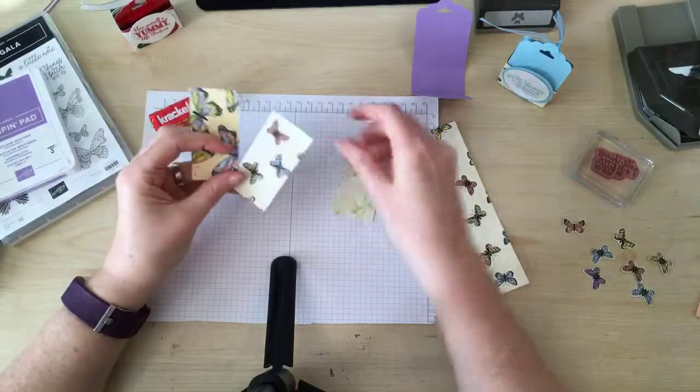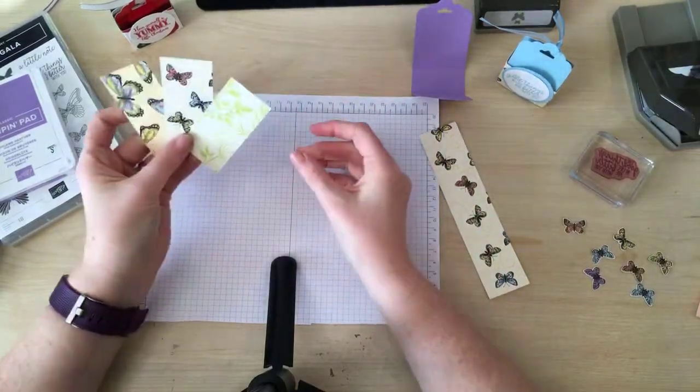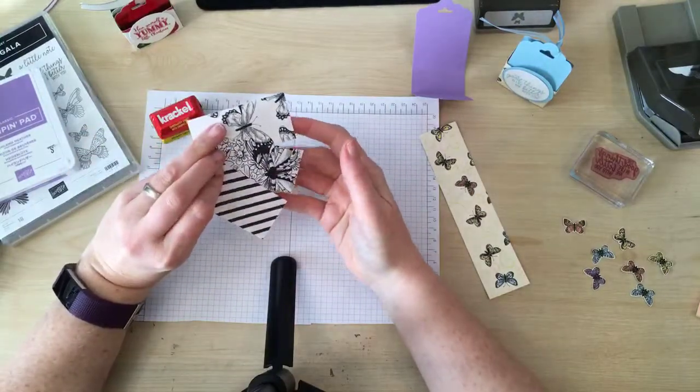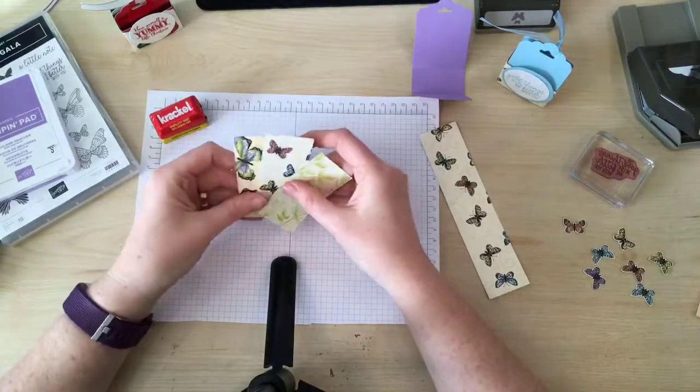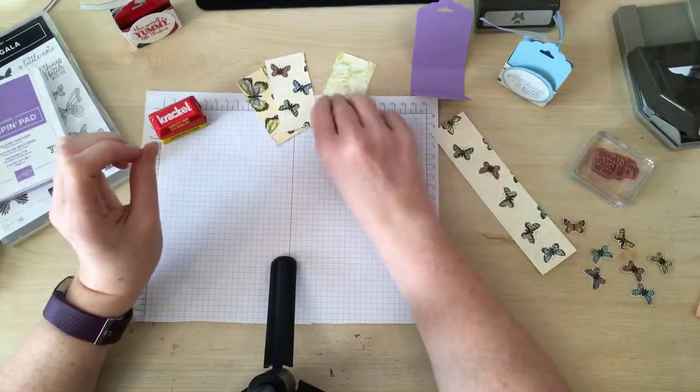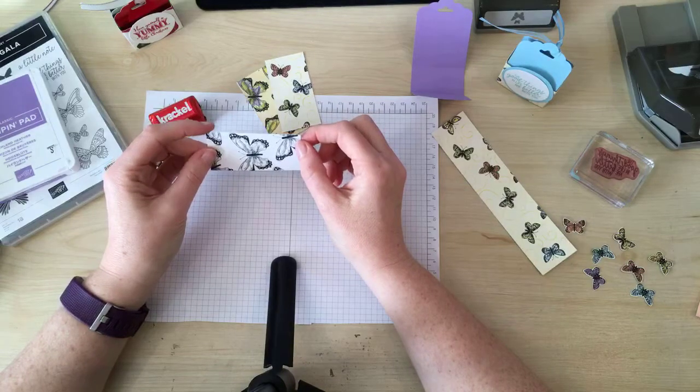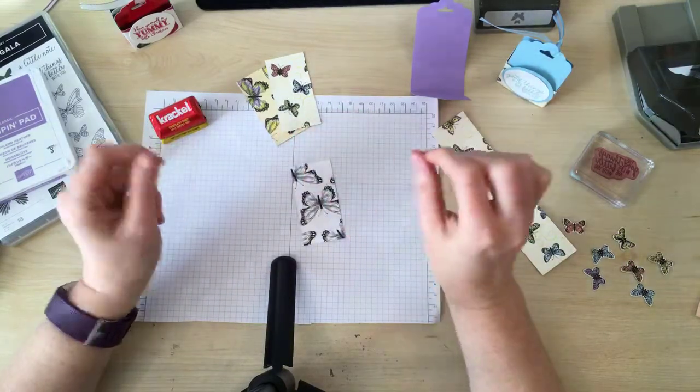And this paper is beautiful. As always, it has designs on both sides. And what I like about it is it's always got color on one side and then black and white on the other side, which is just gorgeous. It works for a lot of really great projects.